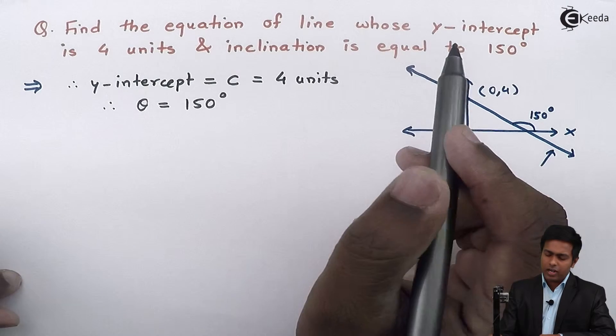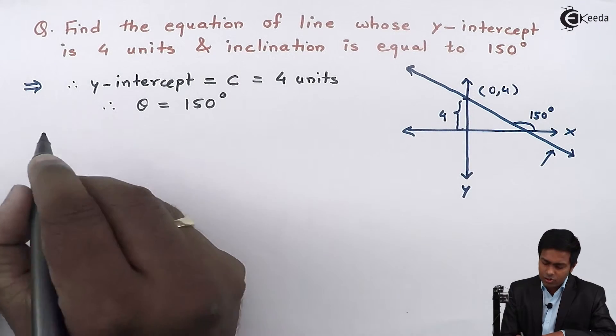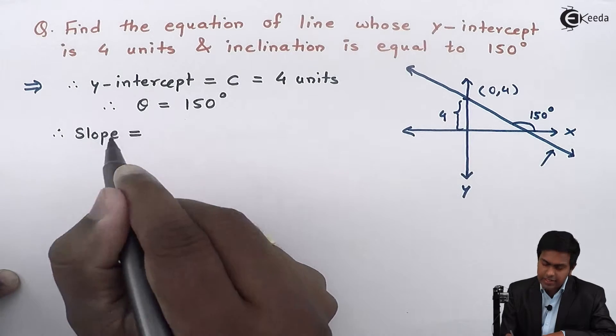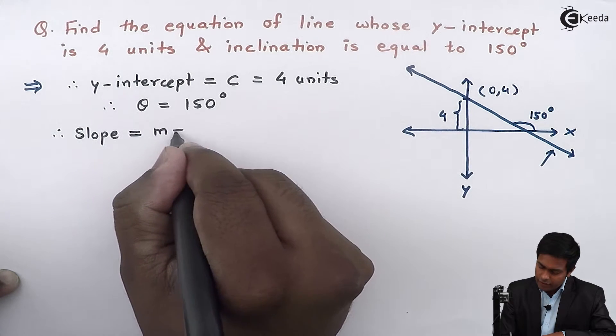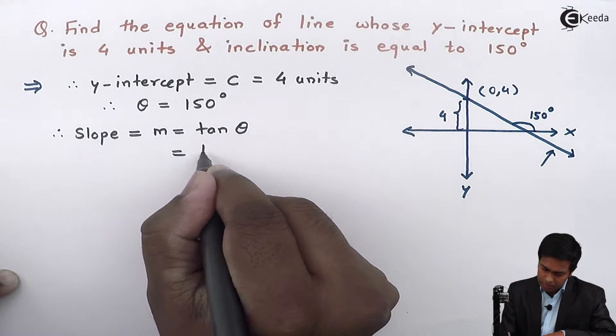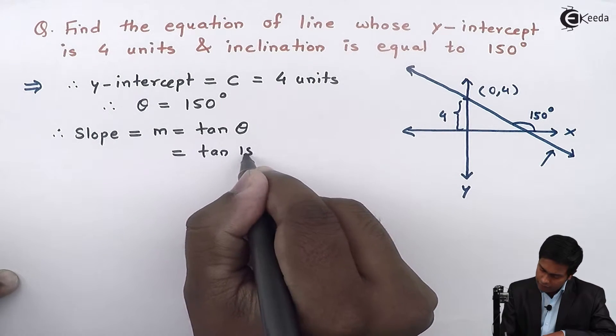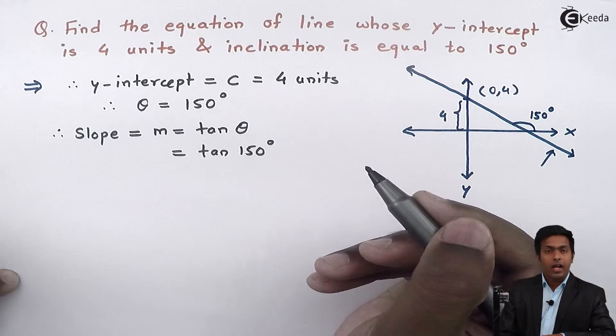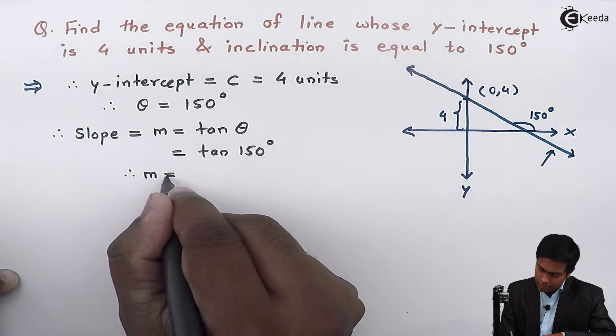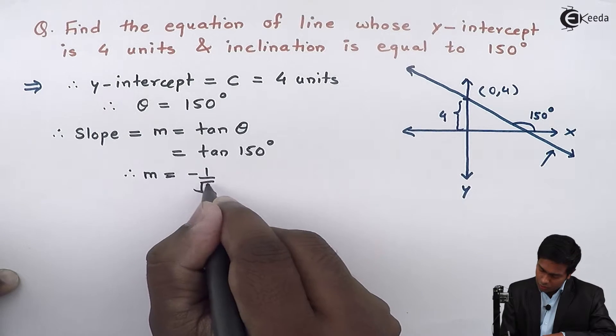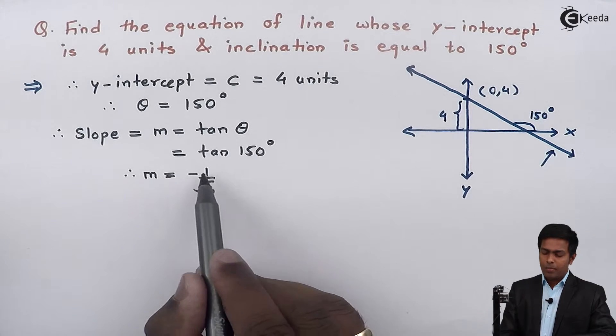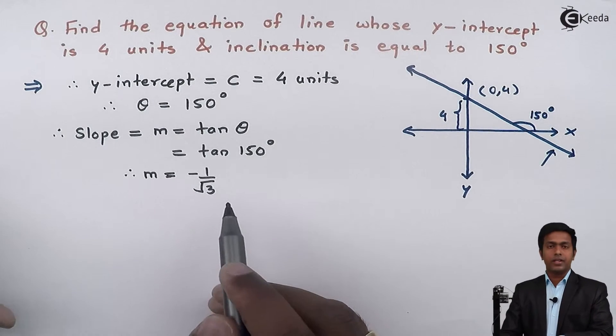So first of all I will find out the slope. Therefore, slope of line when theta is given is given by the formula tan theta. So this will become tan of 150 degrees, and we all know that tan of 150 degrees is minus 1 upon root 3. So the slope of this line is -1/√3.